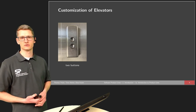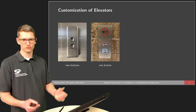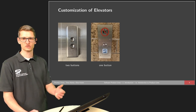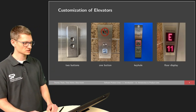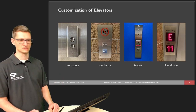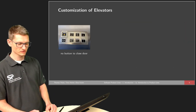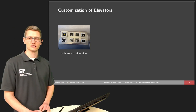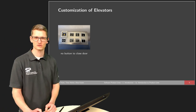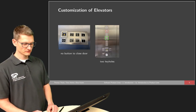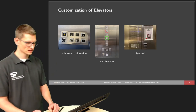We see customization in other examples too. An elevator might have two buttons to press from the outside, or just one button where you cannot decide direction. You might have visual feedback when it's pressed, a keyhole indicating floors not reachable without a key, or a floor display giving more details. These elevators are customized for particular situations both from the outside and inside. For instance, in some elevators there's no button to close the doors — and there are rumors that even when there is such a button, it probably doesn't do anything.